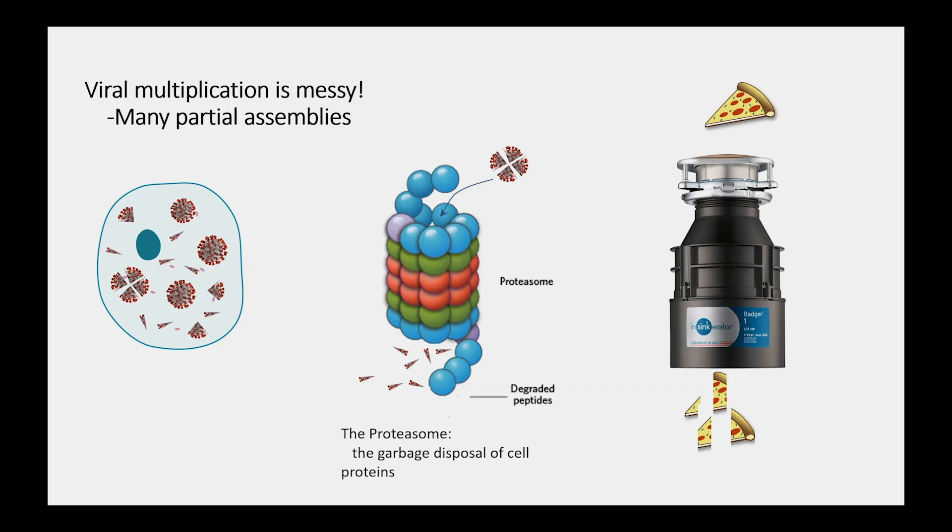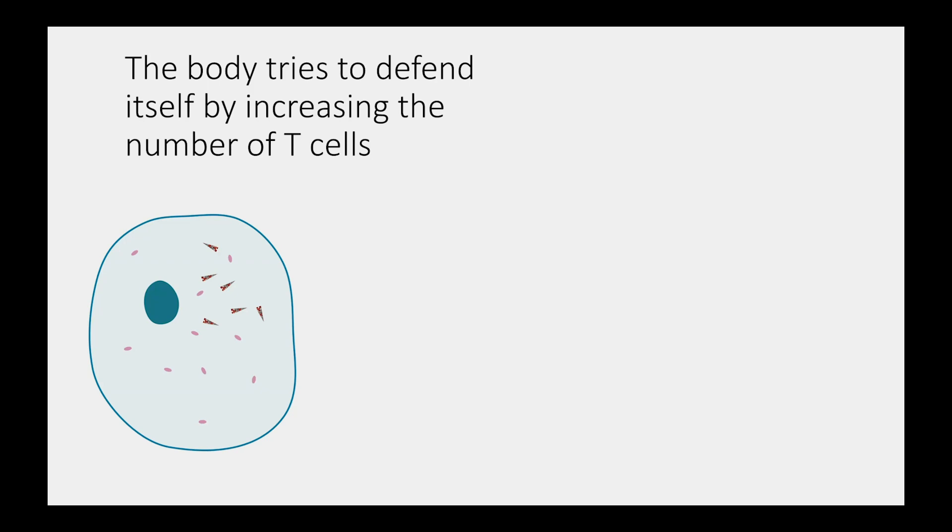From there, our body tries to defend itself by increasing the number of T cells. I'm specifically showing within the cell just those small peptides, not the whole virus. These small peptides then get put onto another molecule, abbreviated HLA. These peptides from the virus are actually shown on the surface of the cell.